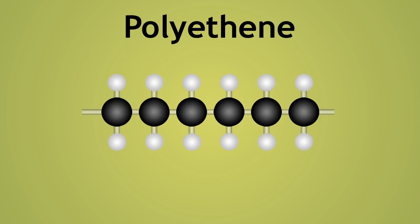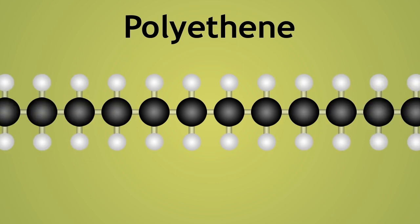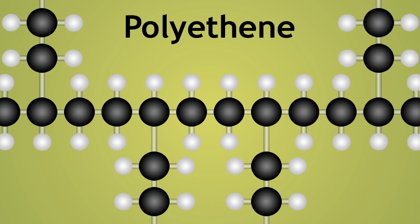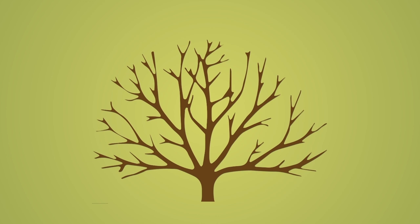These polyethene polymers can be high or low density, all depending on the degree of branching present. The term branch refers to smaller chains sticking out of the main chain, much like branches on a tree.